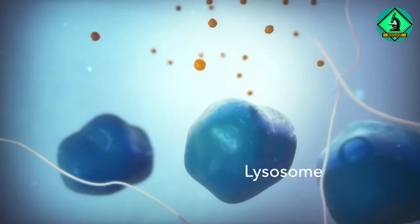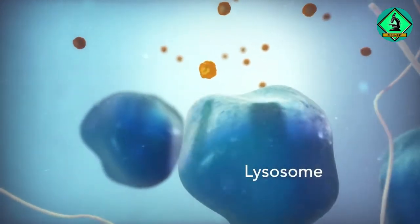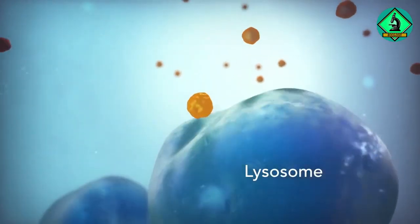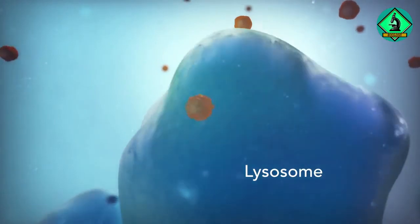Going back to the animal cell, you will see an organelle called a lysosome. Lysosomes are the garbage collectors that take in damaged or worn-out cell parts. They are filled with enzymes that break down this cellular debris.